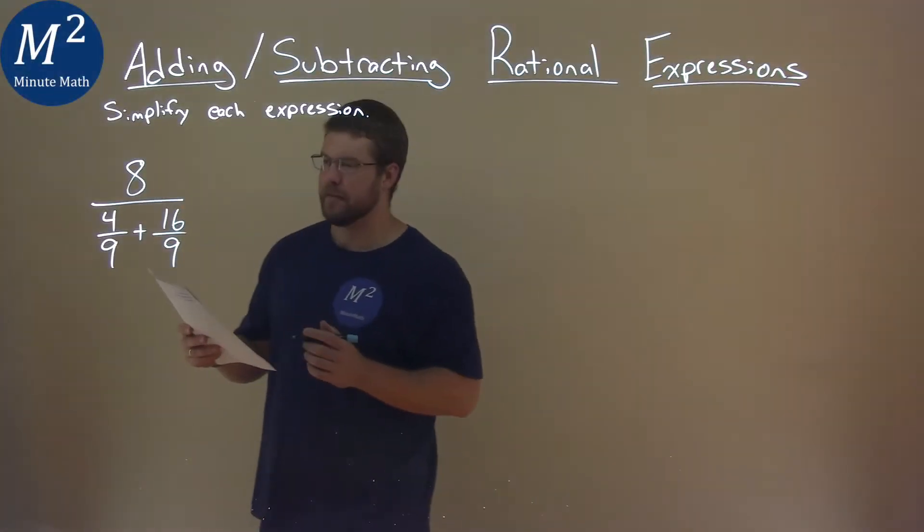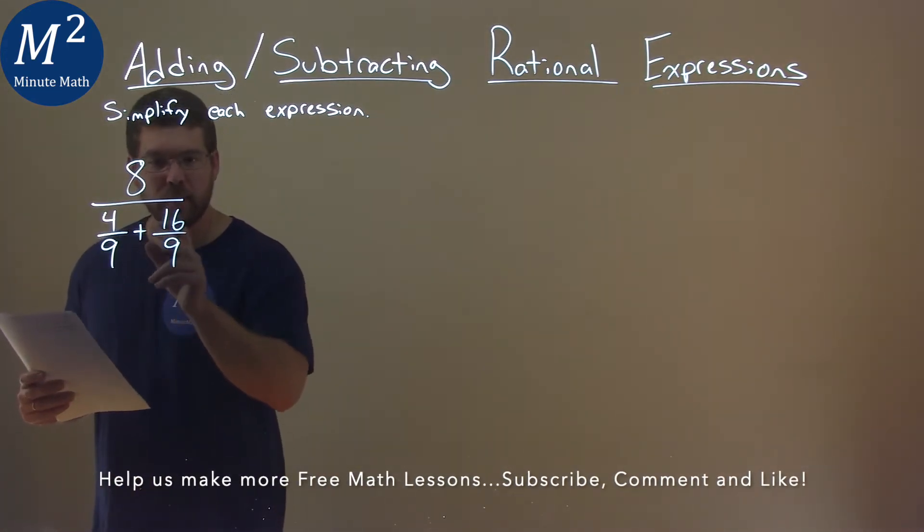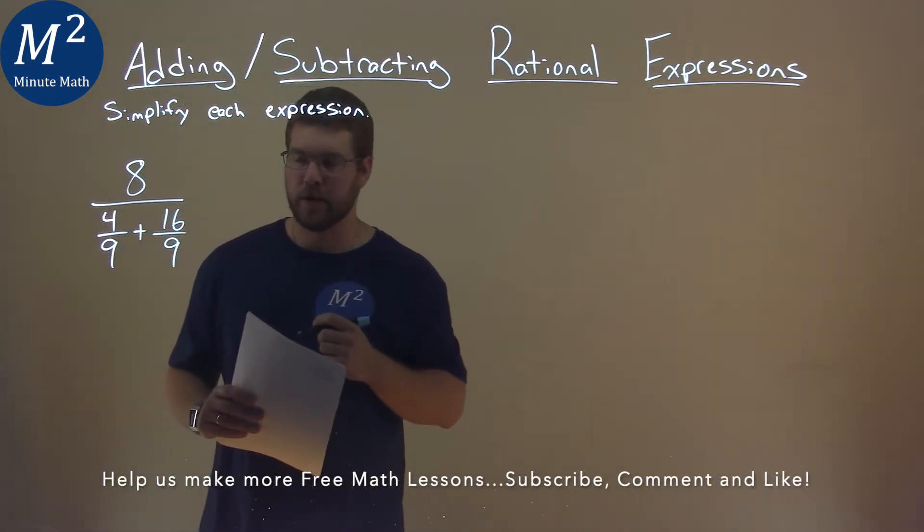We're given this problem right here. 8 over 4 divided by 9 plus 16 divided by 9, and we've got to simplify this expression.